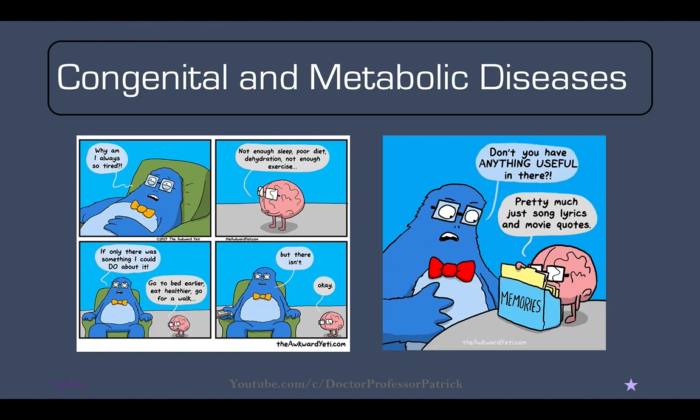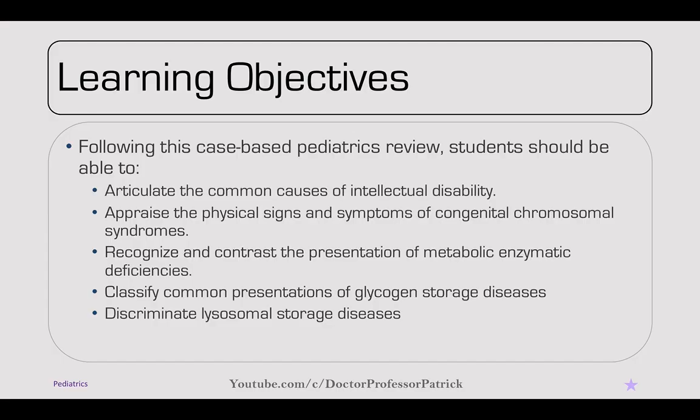Starting out with congenital and metabolic diseases, the learning objectives are to articulate the common causes of intellectual disability, to appraise physical signs and symptoms of congenital chromosomal syndromes, to recognize and contrast the presentation of metabolic enzyme deficiencies, and to classify common presentations of glycogen storage diseases and lysosomal storage diseases.